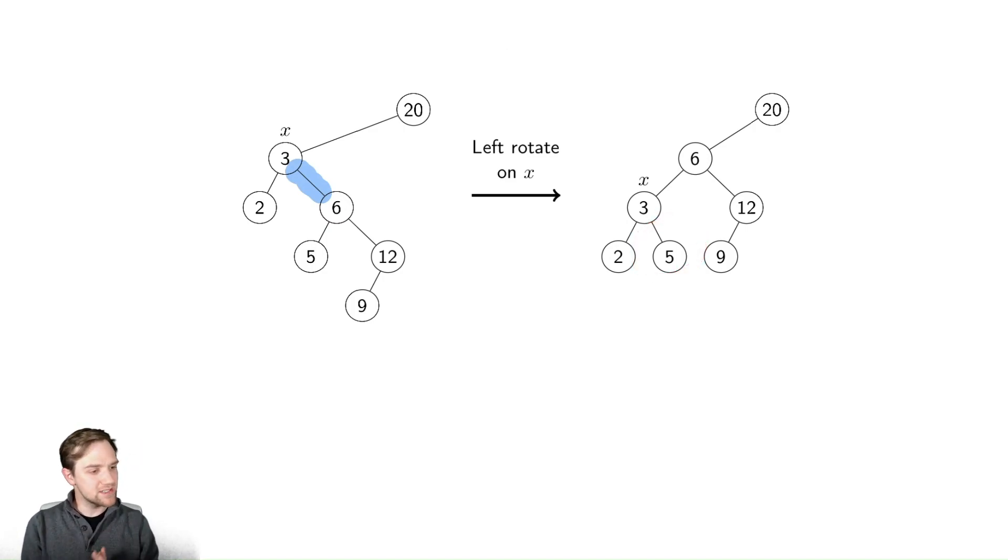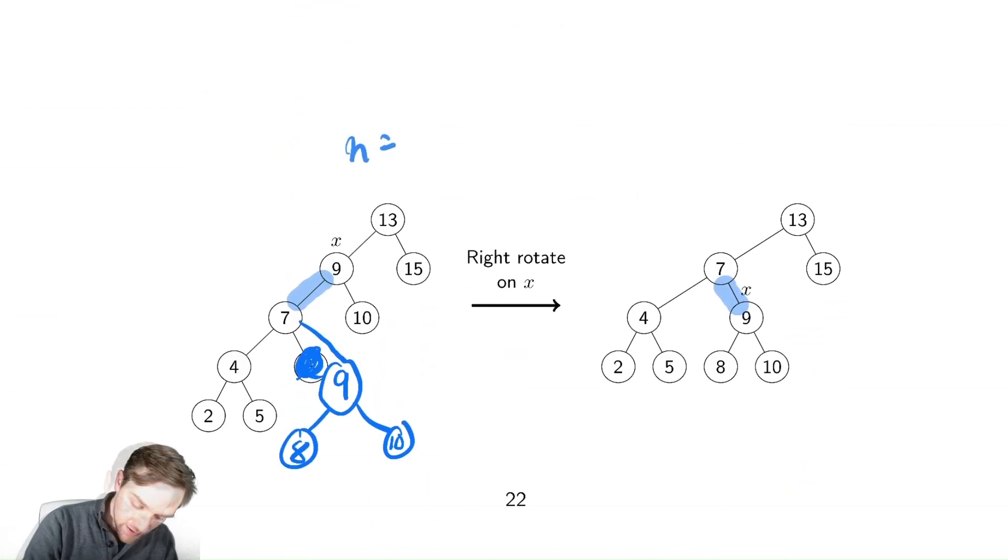And notice in all these examples, we've reduced the height. In this example here, we had a height of four, and then we have a height of three. That's convenient. Here we have a height of four, and over here we have a height of three. That's nice.